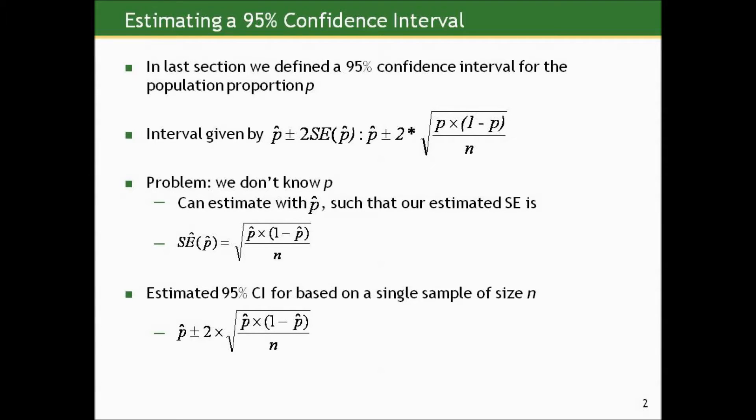In the last section, we defined the 95% confidence interval for the population proportion P, and we said it was given by taking P-hat plus or minus two standard errors of P-hat, where the standard error of P-hat was given by that formula that involves the true population proportion. But the problem is we don't know that. That's why we're doing all this.